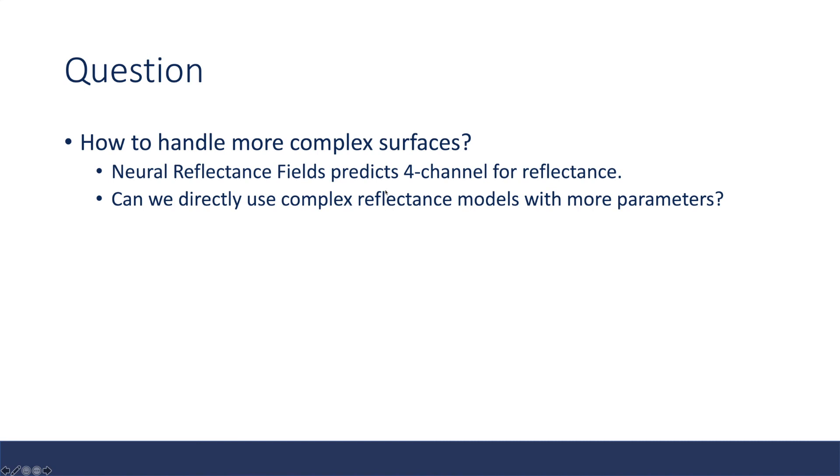Here's one question: how can we handle more complex surfaces? Basically, neural reflectance field is using four-channel properties to represent the reflectance. But in real world, there are a lot of more complex effects that cannot be described by only four parameters. So can we directly use more complex reflectance models with more parameters?